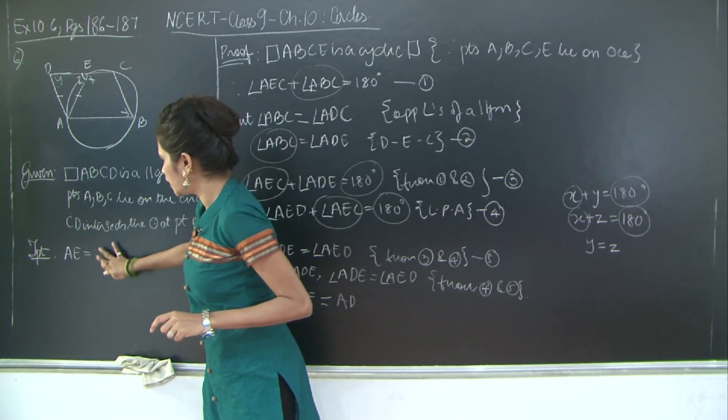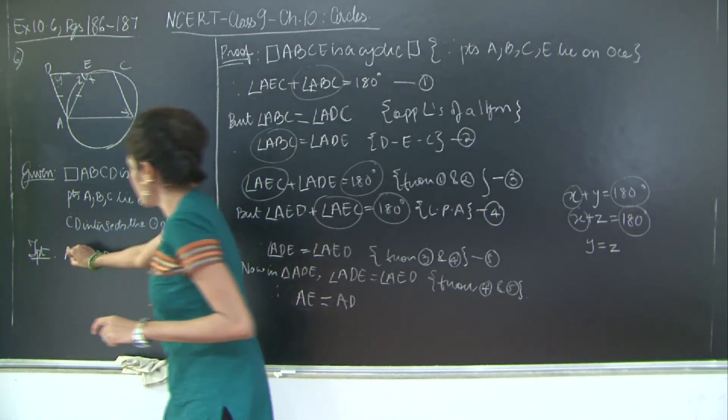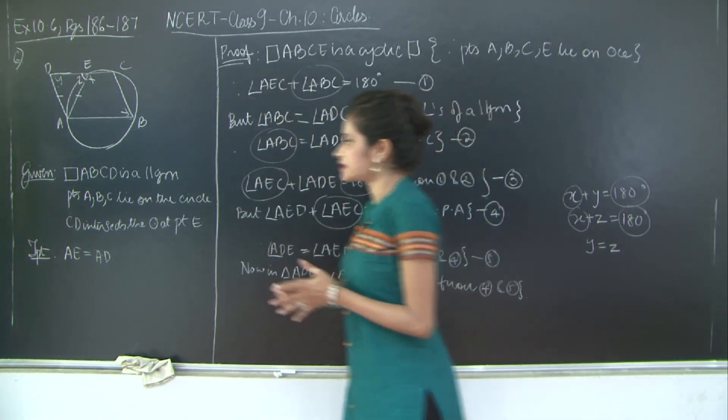So this is what we needed to prove. It's not AE is equal to AD because they are adjacent. I need to prove that AE is equal to AD. So please take a look at the solution of this question.